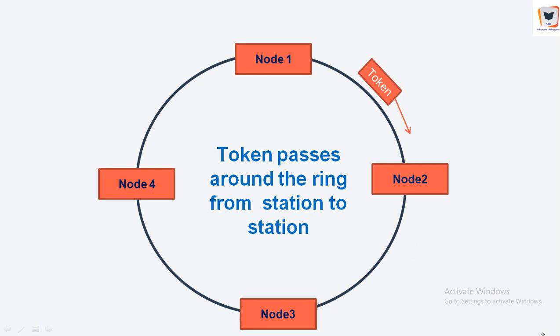Token passing is decentralized and highly efficient, but it has its own problems. For example, the failure of one node can crash the entire channel, or if a node accidentally neglects to release the token or holds it too long, some recovery procedure must be invoked. Over the years many token passing protocols have been developed to address these and other issues, aptly called FDDI and IEEE 802.5.